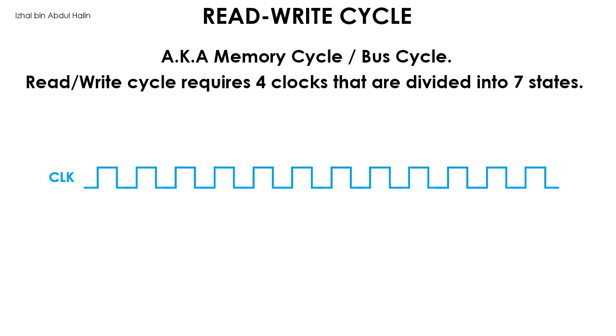Now we are going to study the read-write cycle. It is also known as the memory cycle or bus cycle. It explains the time required by the microprocessor for read and write operations with regards to memory access. To understand this topic, we will take a look at this clock signal. One read or write cycle in the 68K microprocessor is made from 4 clock pulses that are subdivided into 7 states.